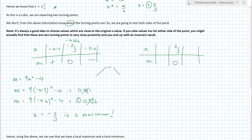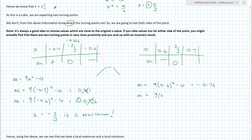For x = 2/3, I choose 0.6 and 0.7 — a smidge either side of 0.666. Substituting 0.6: 9(0.6)² − 4 = −0.76 — negative. Substituting 0.7: 9(0.7)² − 4 — positive. So I have negative, zero, then positive gradient, which means x = 2/3 is a minimum. This makes a lot of sense for a cubic to have one maximum and one minimum. This method is called testing the sign either side.